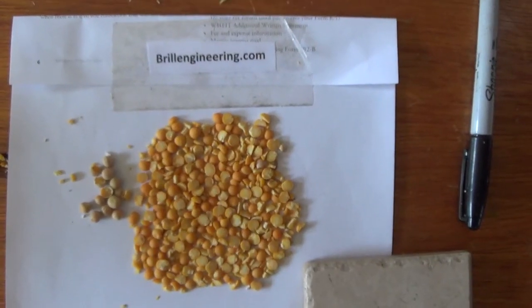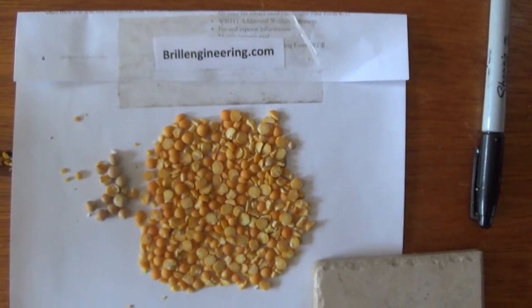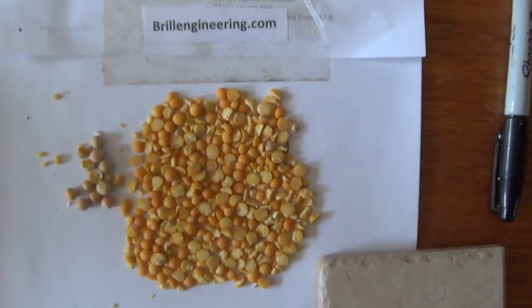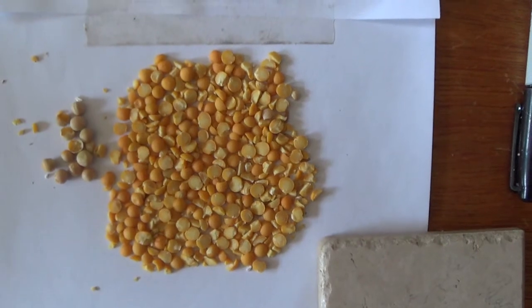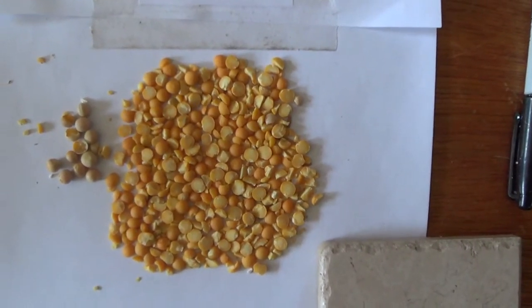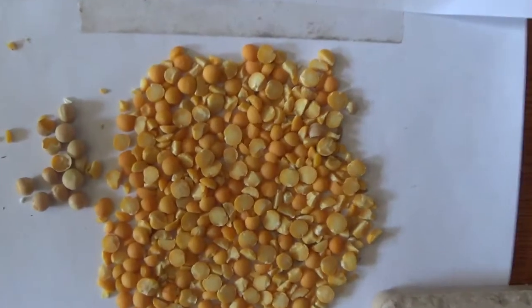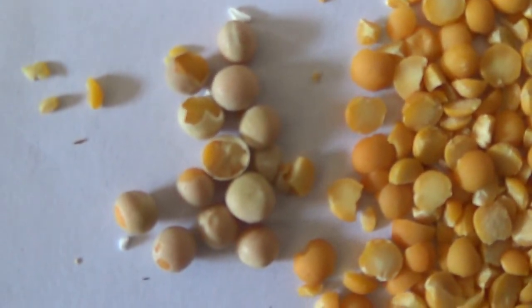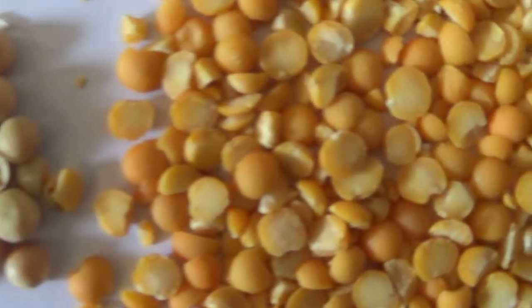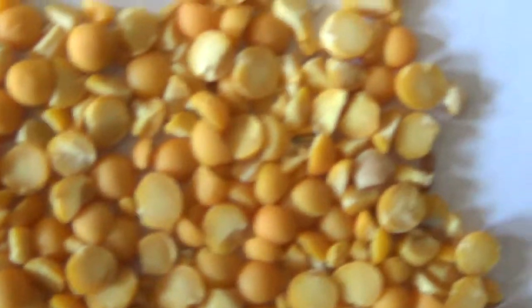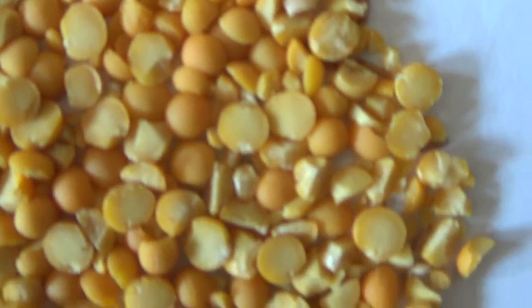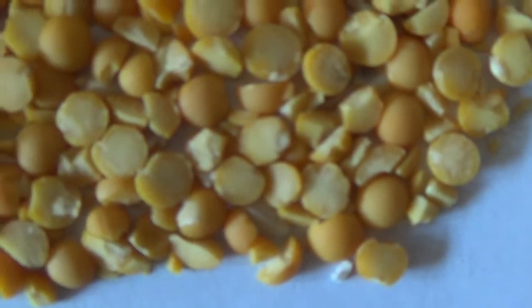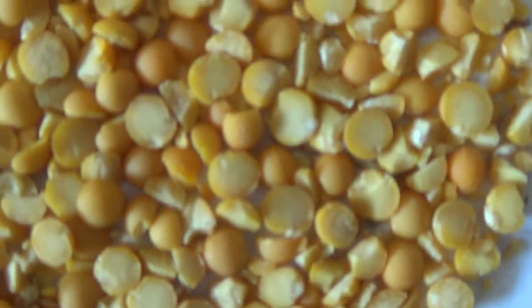Here are the results from running the yellow field peas through the impact huller. As you can see, we're way above the winnower - 90 percent. Over here there's the few that remain. Over here are the halves plus some that are broken pieces. I don't know what the end result is for people that want to process field peas, but